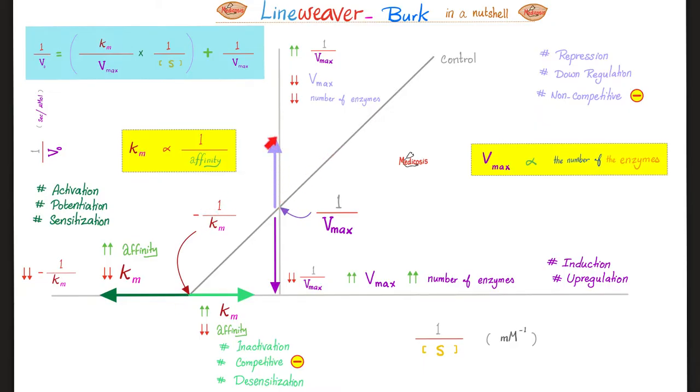If this lovely point is shifted upwards, it means that VMAX is decreasing, which could mean that the number of enzymes are decreasing due to repression, down-regulation, or non-competitive inhibition. However, if this point is going downwards, VMAX is going upwards, which means increased number of enzymes due to induction or up-regulation.